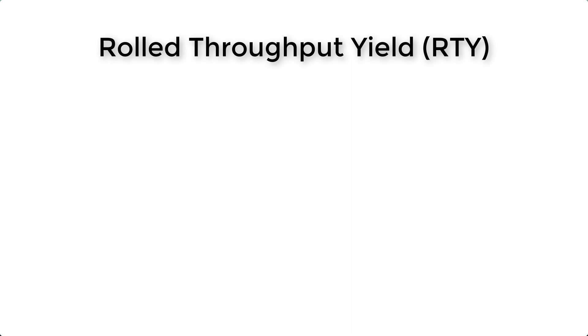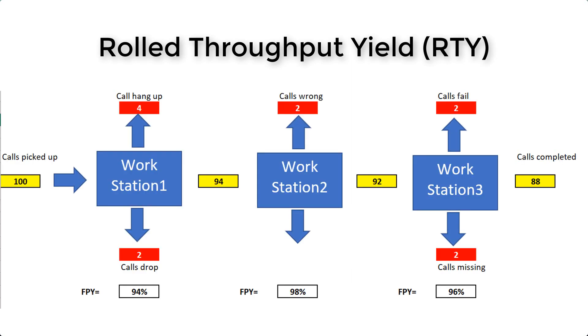Now we're going to review what Raw Throughput Yield means. The Raw Throughput Yield is the percentage of units which go through the complete process without requiring rework or failing to complete any process step. Let's check a sample in Excel to see all the details.